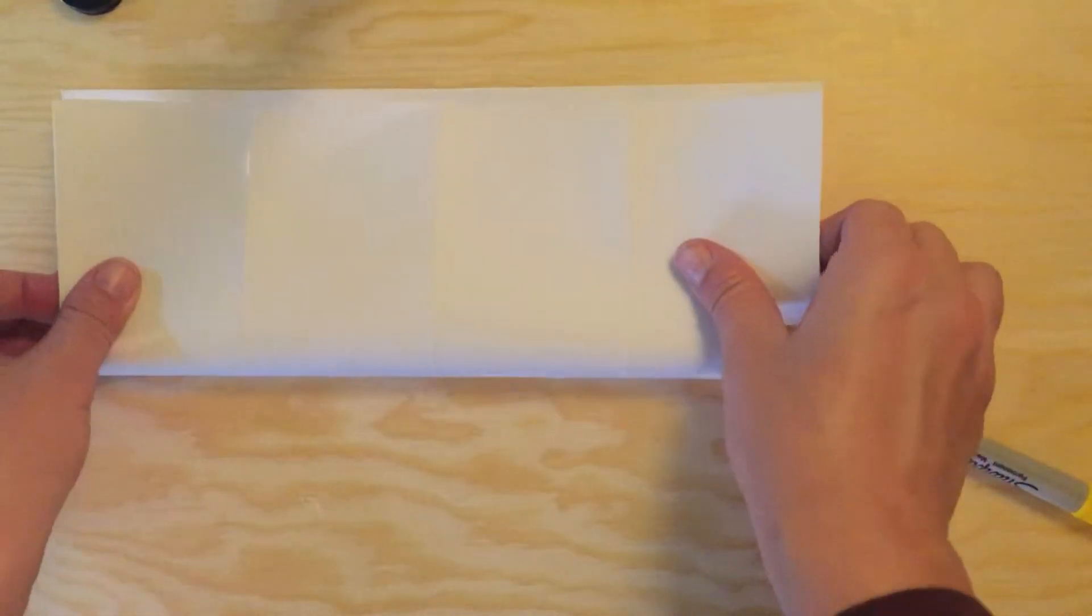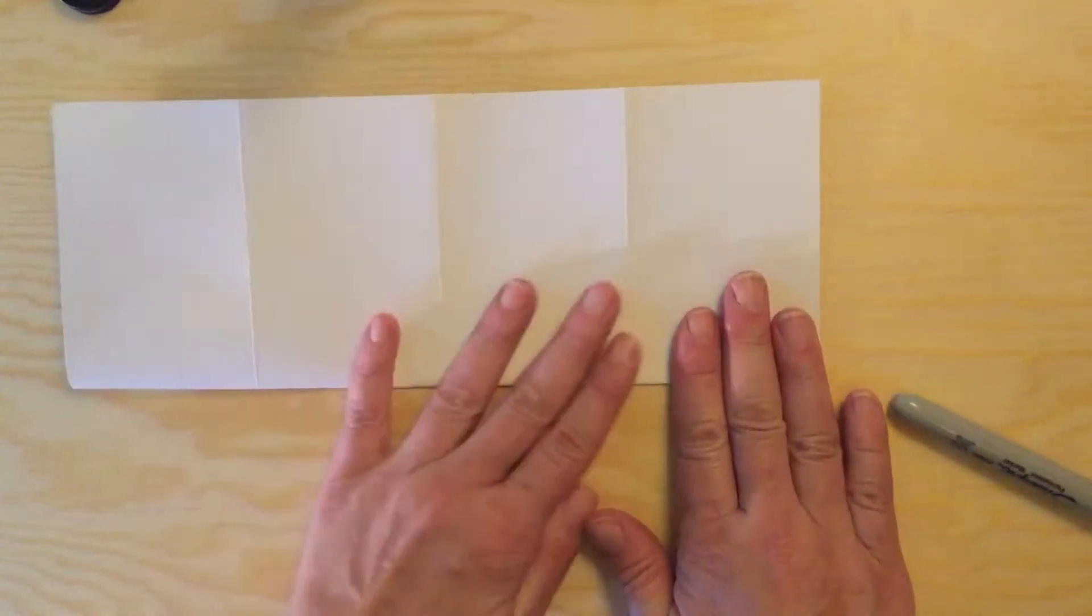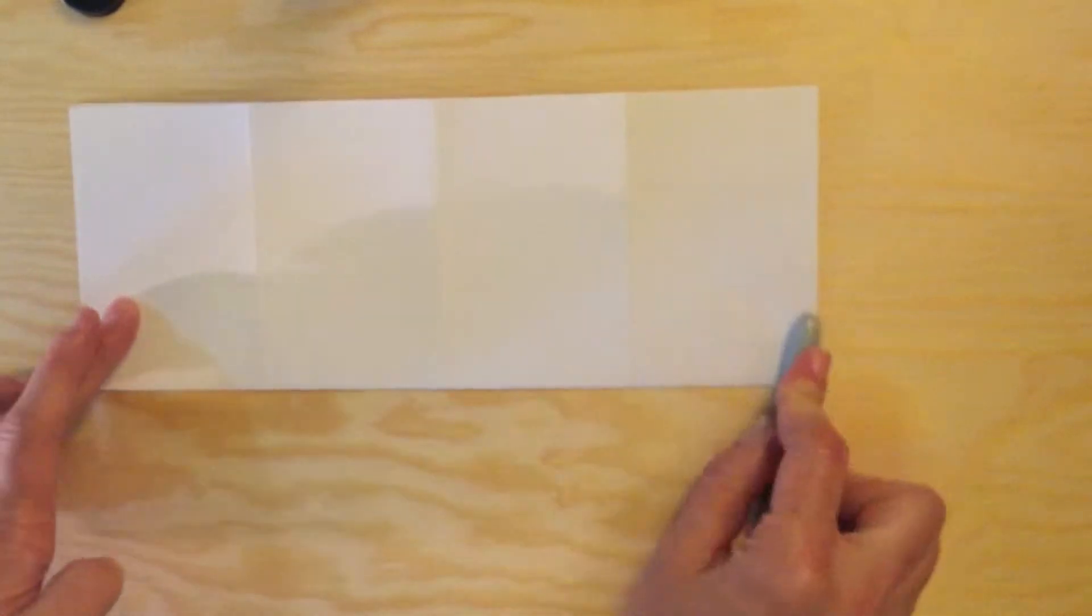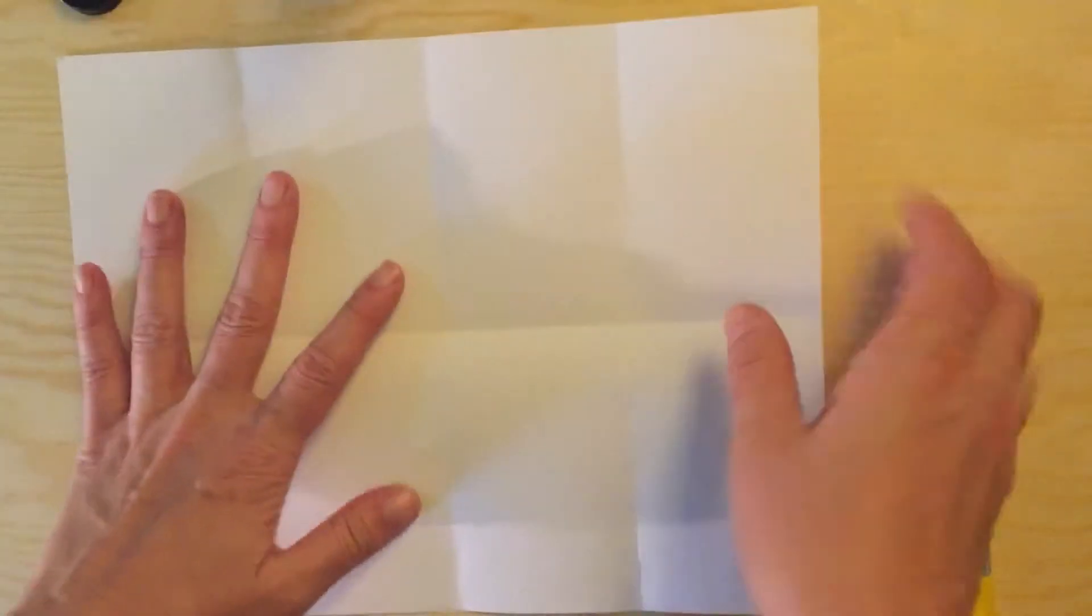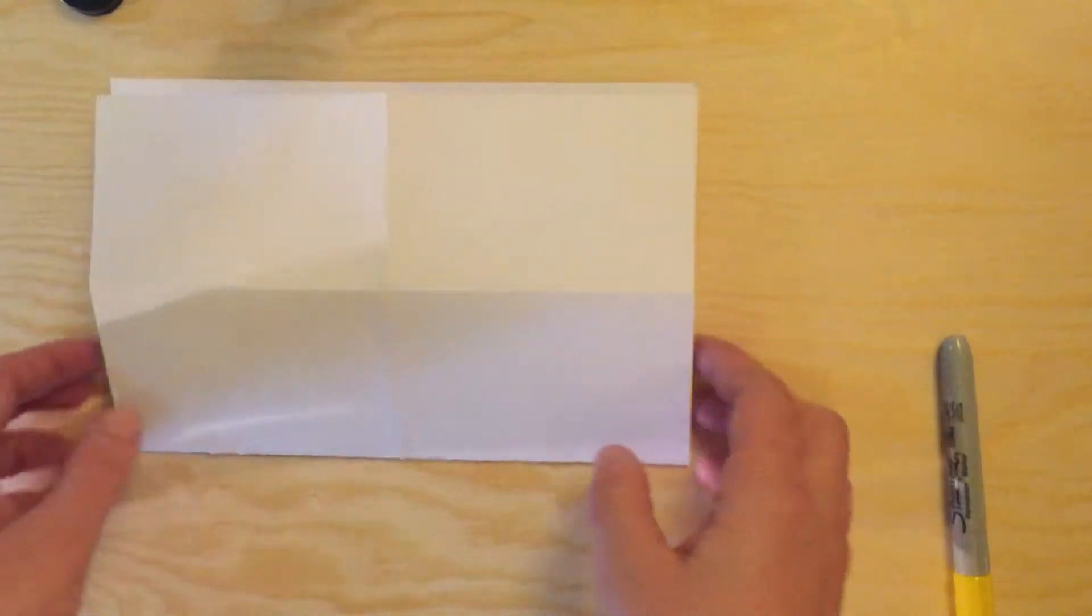Open it up and then fold the entire paper in half long ways or hot dog style. You want to open it up and fold it in half again hamburger style like you did at first.